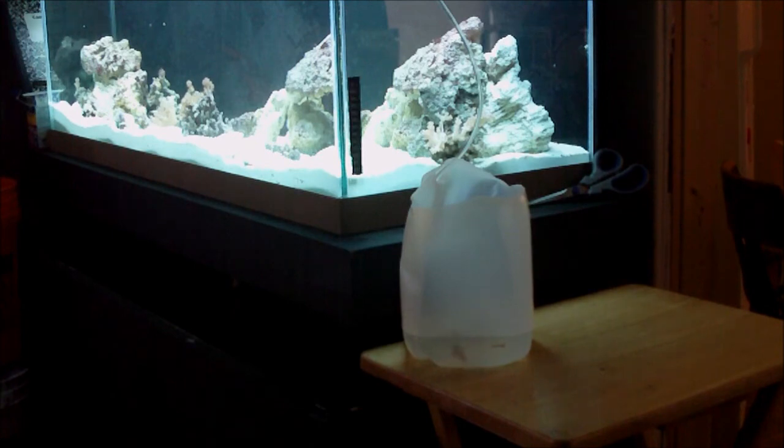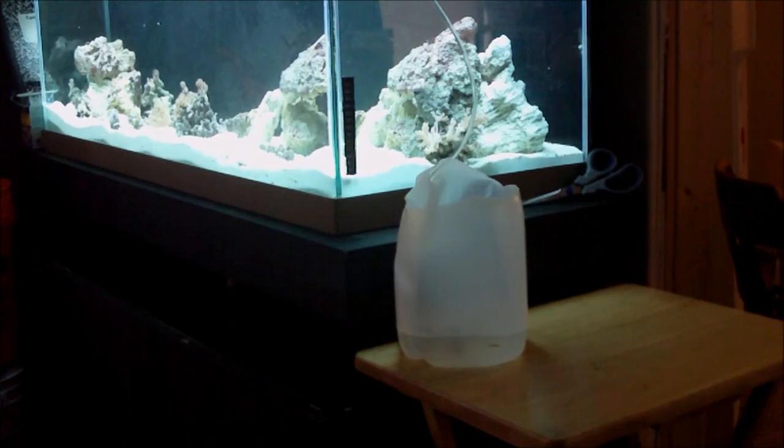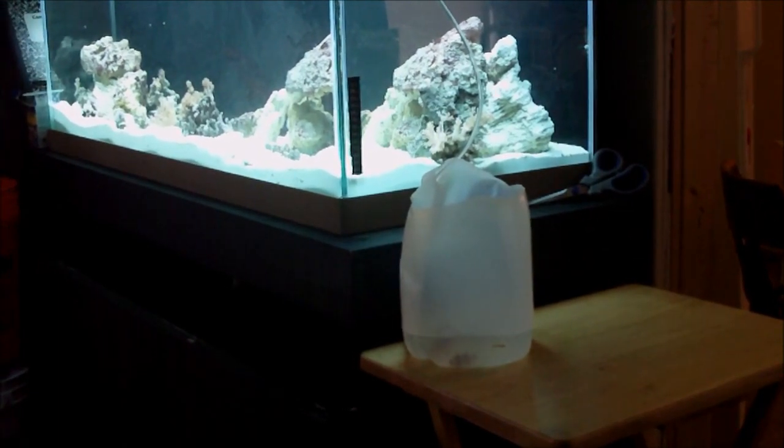I usually will make a little mark on the bottom of the jug just so I get an idea of how fast it's acclimating. I usually like to see it triple the water volume in it before I will put the fish in the tank. It's good to drag it out too. The slower you go, the better it's going to be, and the happier your fish are going to be for it.